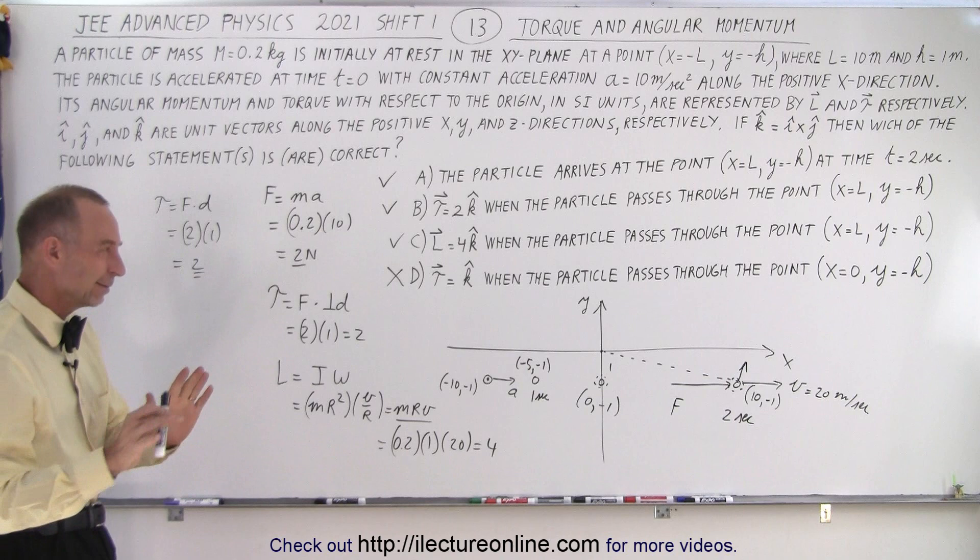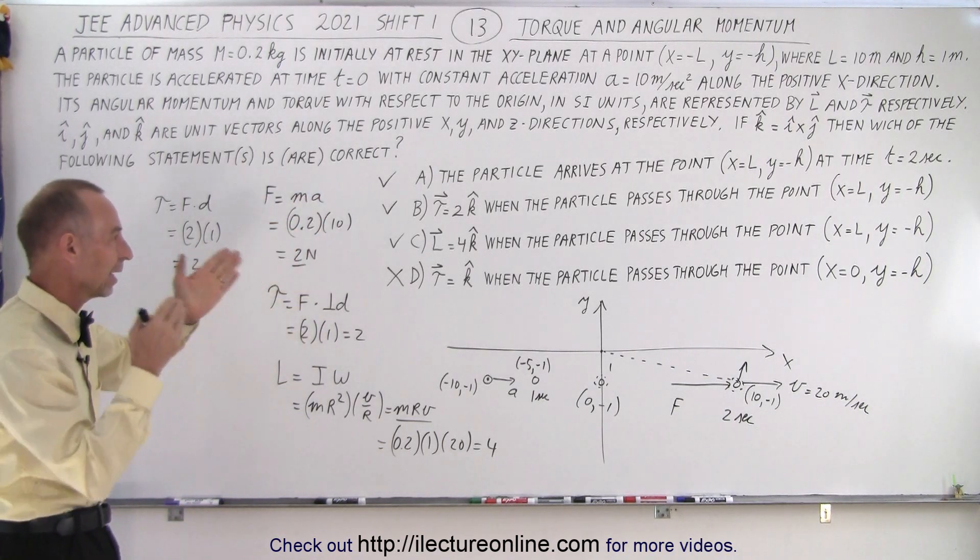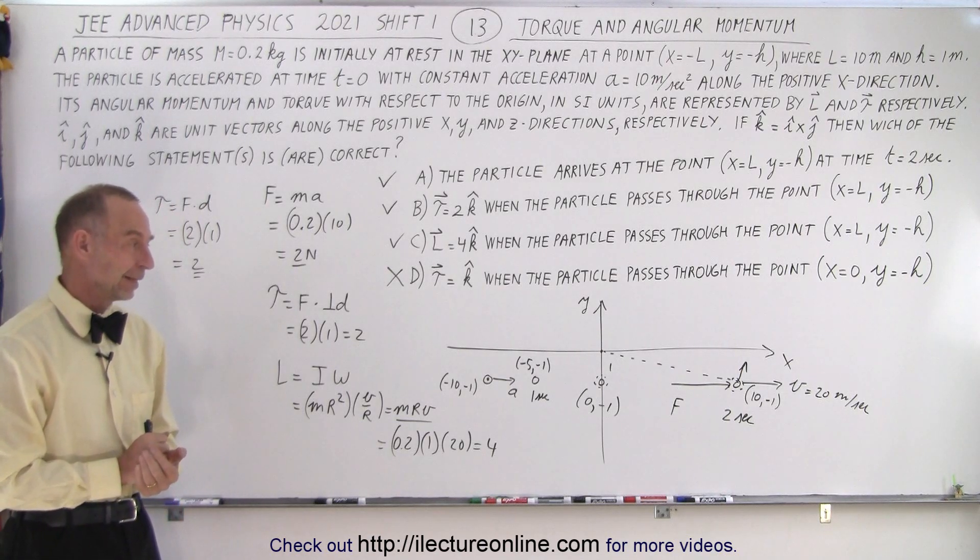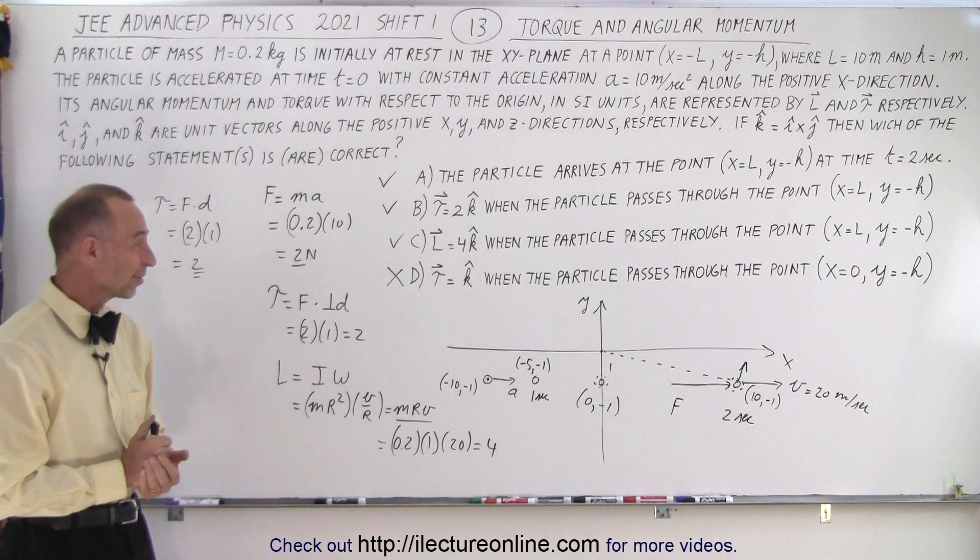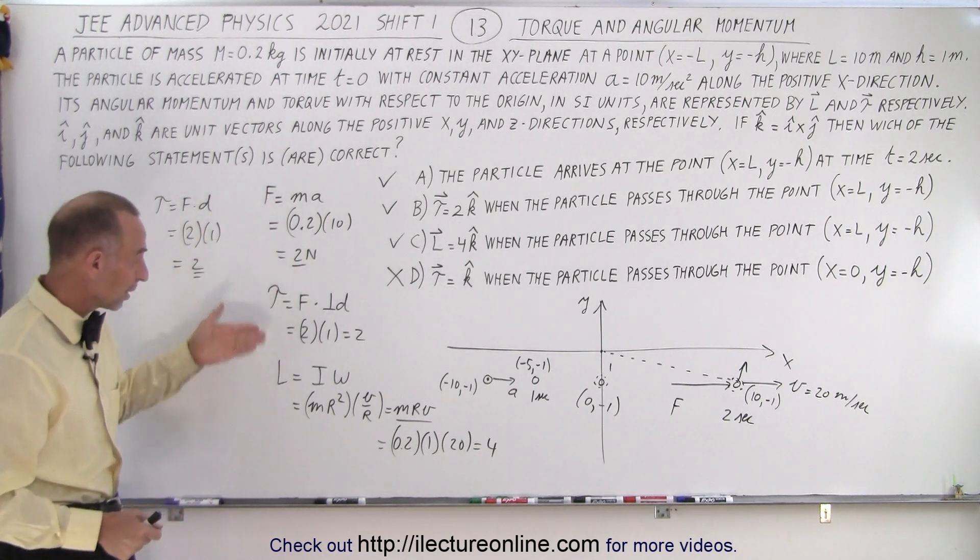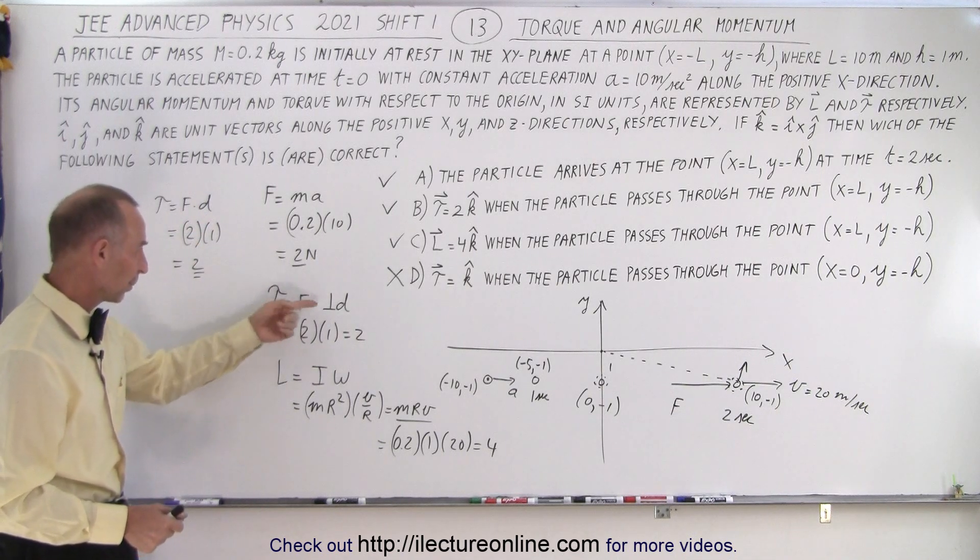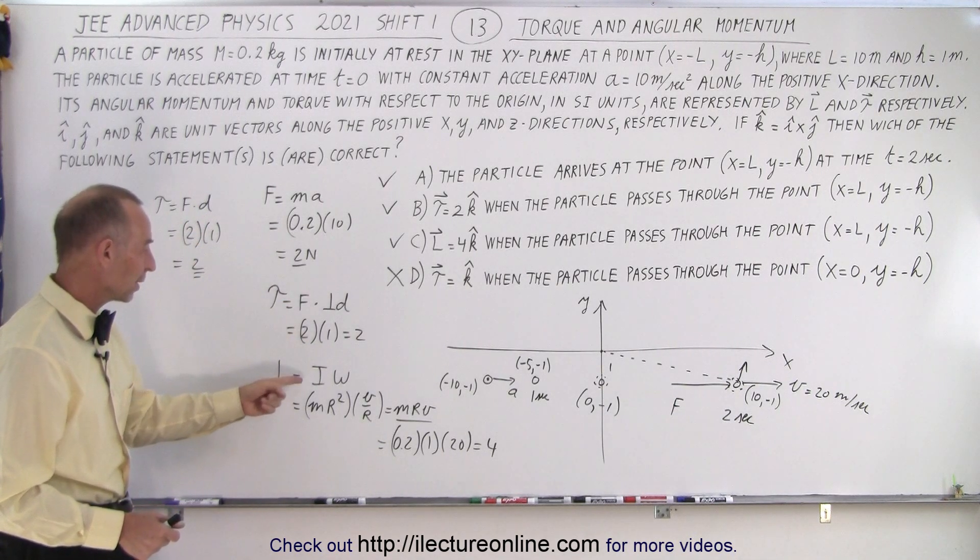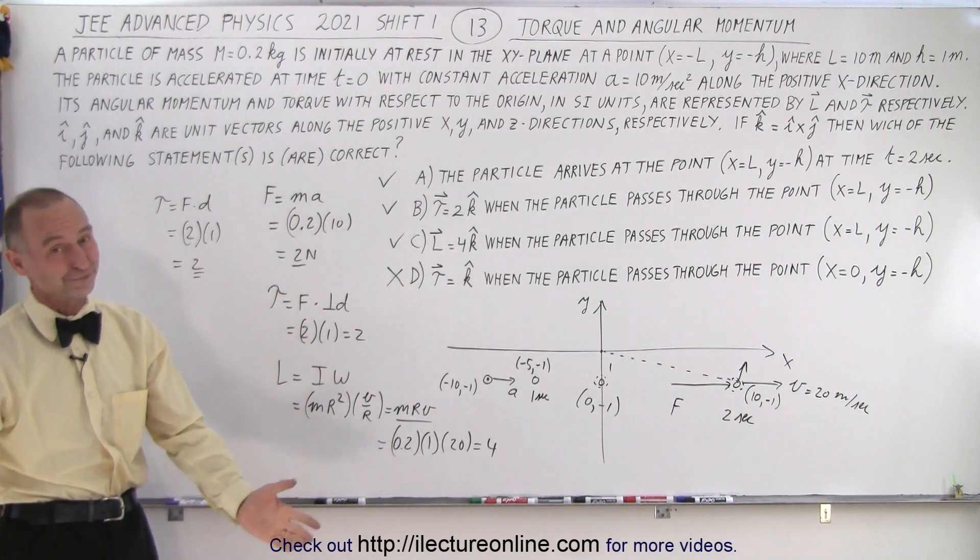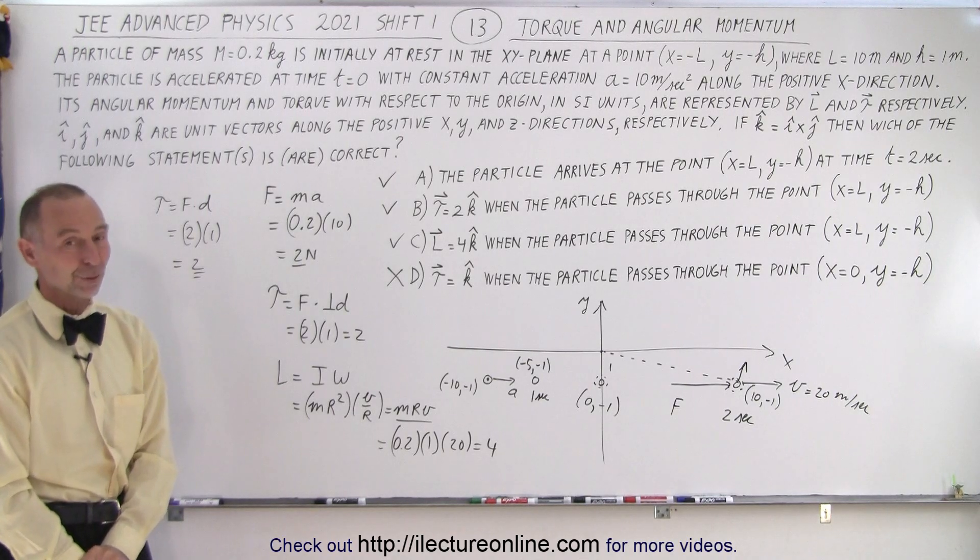And it looks like the answers a, b, and c are the correct ones, and they are probably the correct ones, and d is the incorrect one. And that would be the way in which we get full credit on this problem. I probably spent more than two minutes on getting the answers, so you can see you have to work very quickly and go to the definitions of force equals ma, torque equals f times perpendicular distance, and angular momentum equals I times omega to get the correct answers. And yeah, two minutes, two and a half minutes to do this problem would be a very short time indeed.